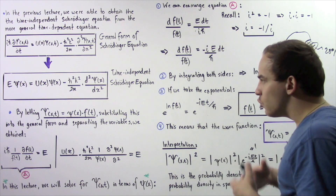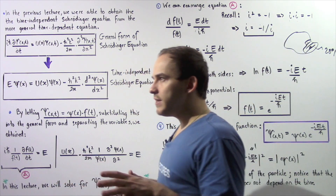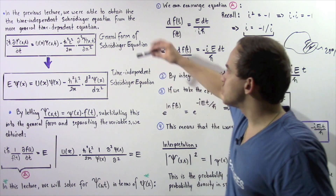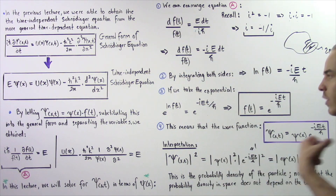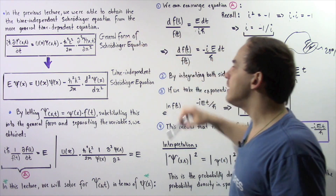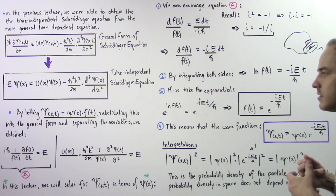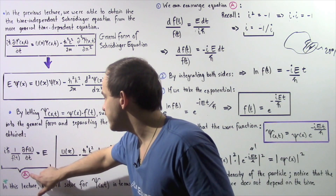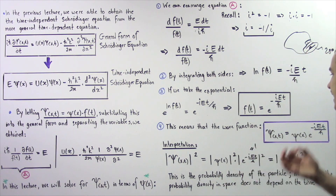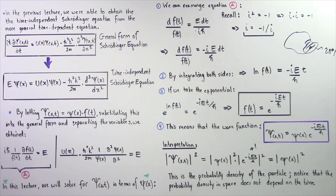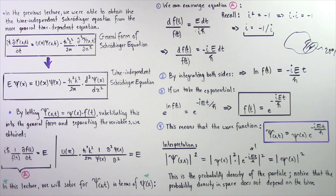Let's review what we discussed. In the previous lecture, we used the general form of the Schrödinger equation — the time-dependent equation — to solve for the time-independent equation. In this lecture, we used equation A to determine the probability density, which is given by taking the square of the absolute value of the wave function.